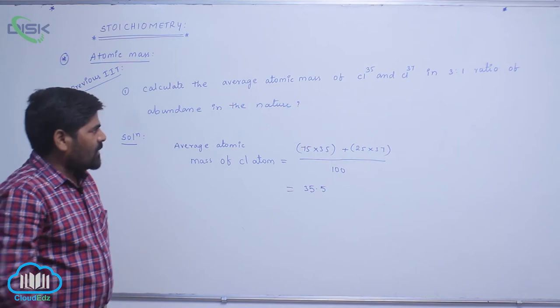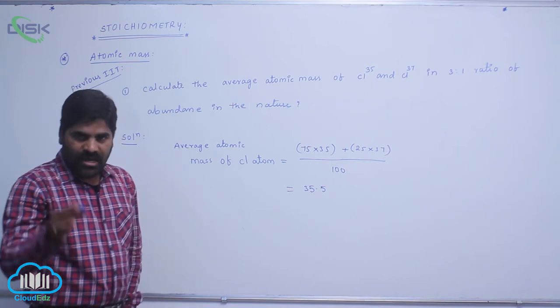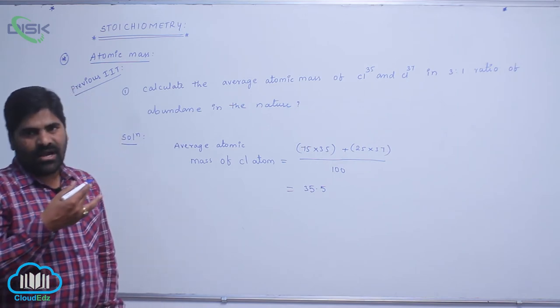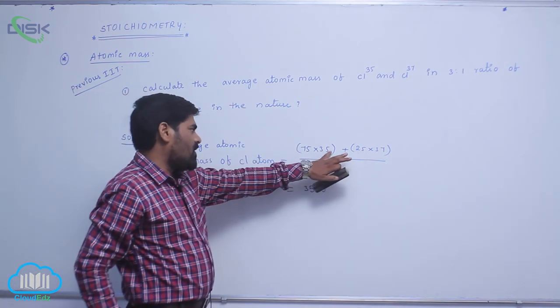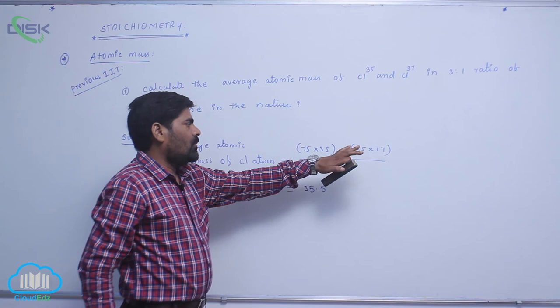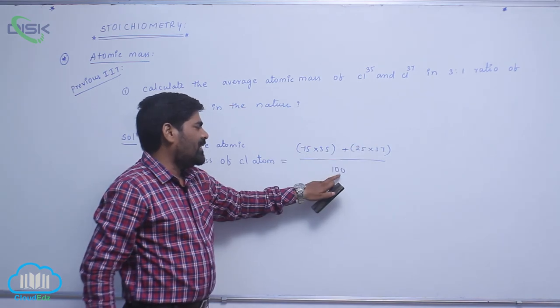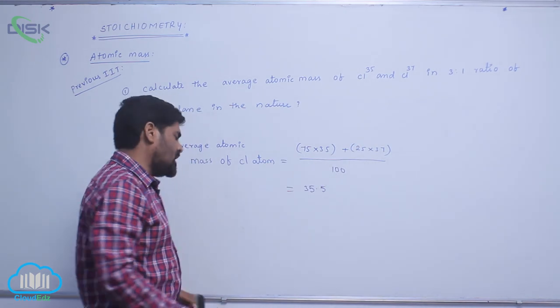This problem is related to isotopic mass. Isotopic mass is the summation of percentage of abundance times atomic isotopic mass, divided by the relative ratio, which is 100.